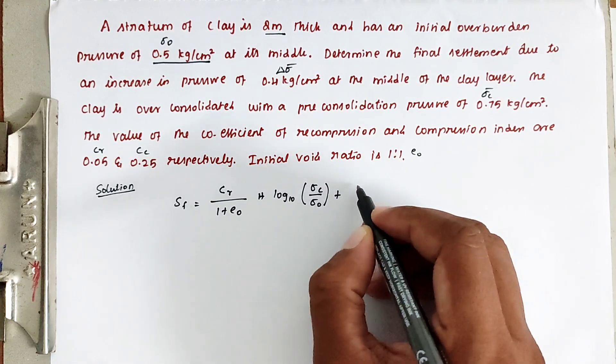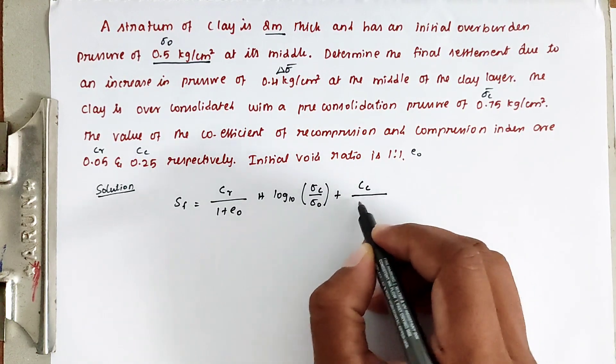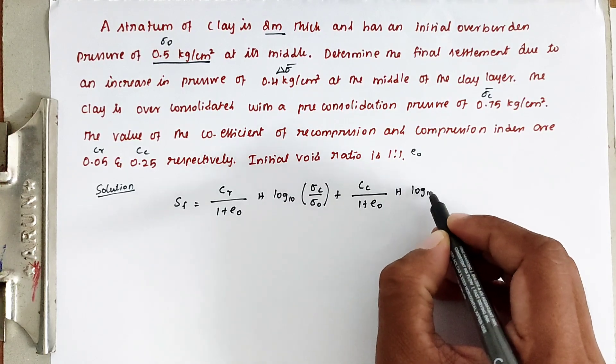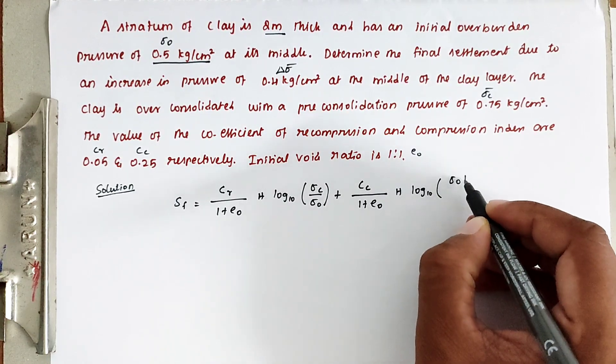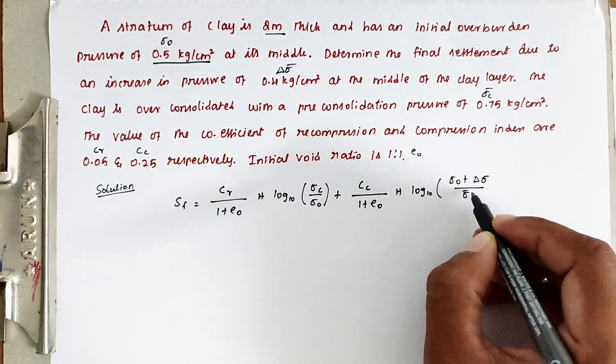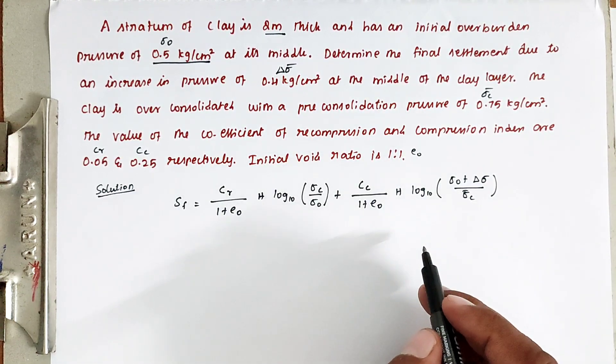Plus Cc, that is compression index, divided by 1 plus e naught, into h, into log 10, into sigma 0 plus del sigma dash divided by sigma c. This is the formula for final settlement for compression under recompression phase.